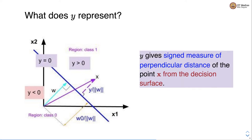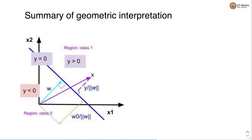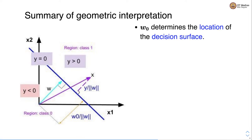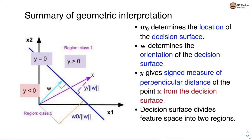y gives a signed measure of the perpendicular distance of point x from the decision surface. To summarize the geometric interpretation: w0 determines the location of the decision surface; w determines the orientation of the decision surface; y gives the signed measure of perpendicular distance of point x from the decision surface; and the decision surface divides the feature space into two regions, one for class 1 and another for class 0.